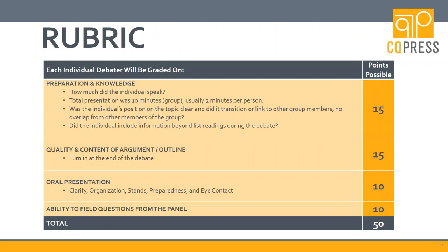This shows the rubric I use for grading this assignment, which is listed in the syllabus. Even though it's an individual grade, it looks at the way students worked with their group members to collectively present a particular perspective on a public policy topic. They would turn in their outline at the end of the presentation, with the rubric really focusing on enhancing critical thinking, research ability, and oral presentation skills — something that some students often struggle with but appreciated the capacity to develop.